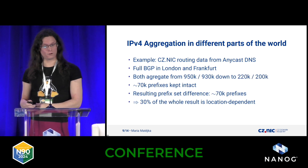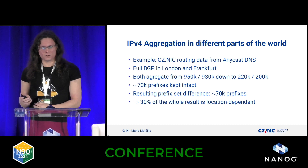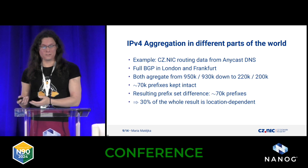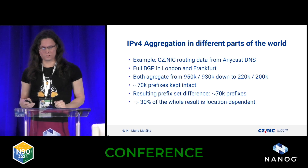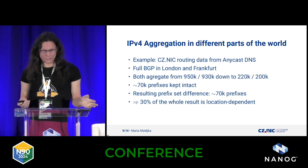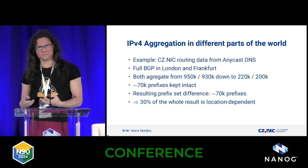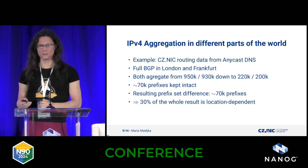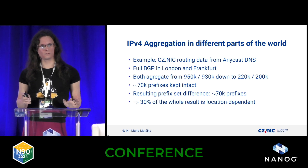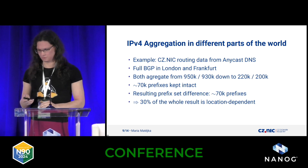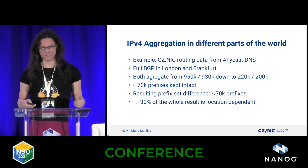In IPv4, it went to like 200,000. Here you can also see the data, and the location-dependent part is a bit bigger — I don't know why. It would need much more research.